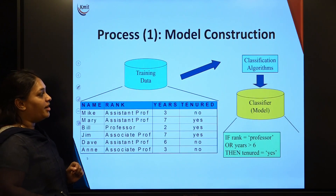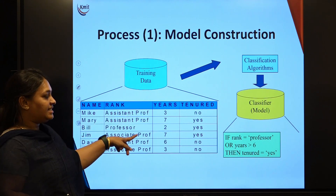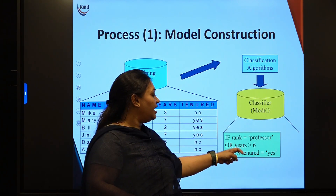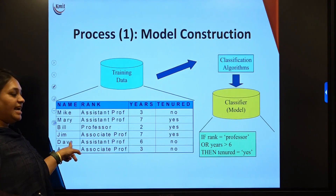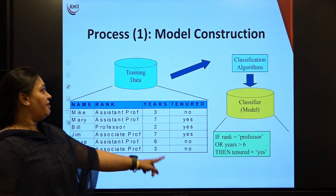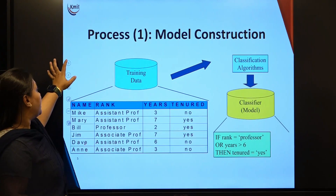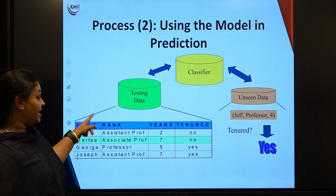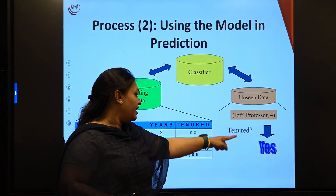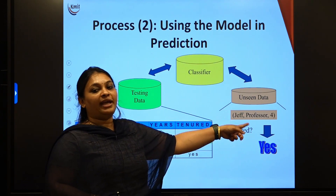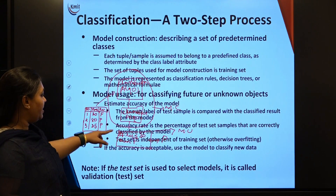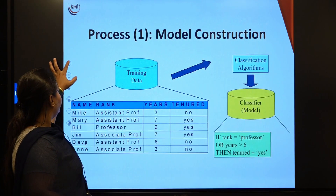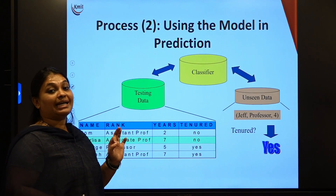Looking at the diagram — in the construction model, I have a training set, I apply a classification algorithm, I build a classifier model, and write if-then conditions based on the training data. In the model usage step, I again have a training set with a classifier, and for unseen data: if the condition is yes, it goes one way; if no, it goes the other — printing pass or fail accordingly. This is all about classification and prediction.